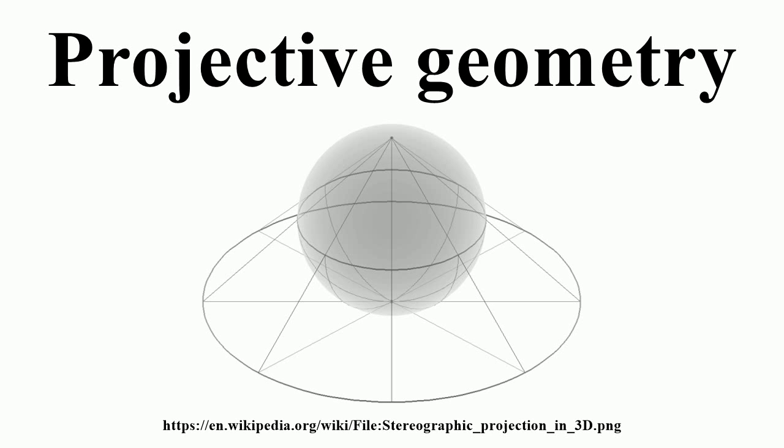The basic intuitions are that projective space has more points than Euclidean space for a given dimension, and that geometric transformations are permitted that transform the extra points to Euclidean points, and vice versa.